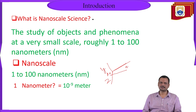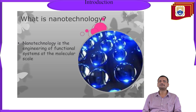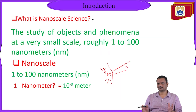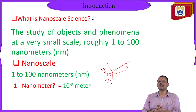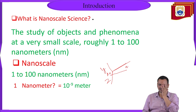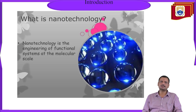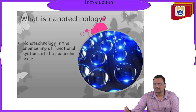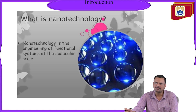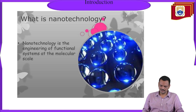One nanometer is around 10⁻⁹ meters — it is very small. What is nanotechnology? If you prepare any material in the 1 to 100 nanometer range and observe its optical, mechanical, or any physical property, that is nanoscience. But when you utilize that science or that material for a technological application, that is nanotechnology — the engineering of functional systems at the molecular scale, to fulfill a particular requirement.